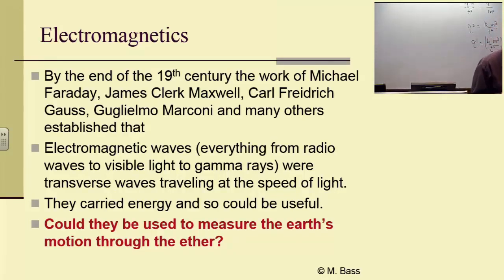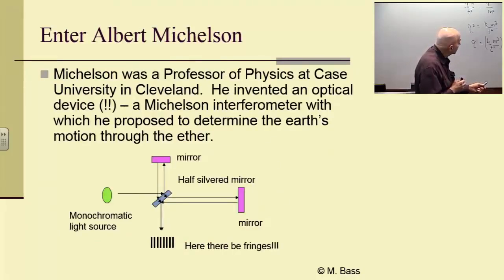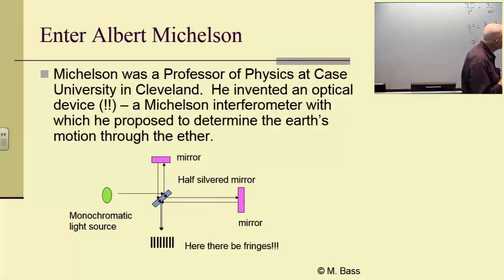Along with the advent of electromagnetics, you find out that you've got these things called electromagnetic waves and they propagate through the universe at the speed of light. Can you use the speed of light to measure the earth's motion through the ether? You now have a tool. You have the speed of light. So you need Albert Michelson. He's a professor at Case University in Cleveland. And he invents an optical device, the Michelson interferometer.